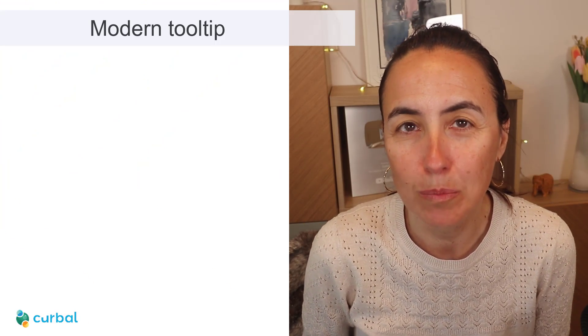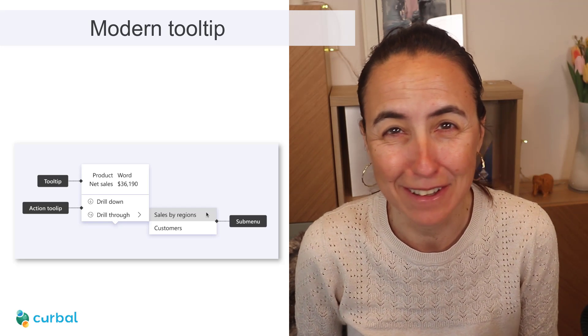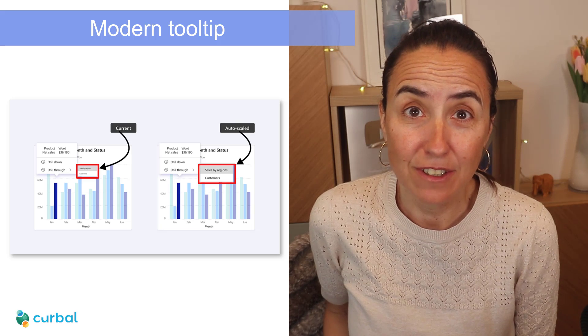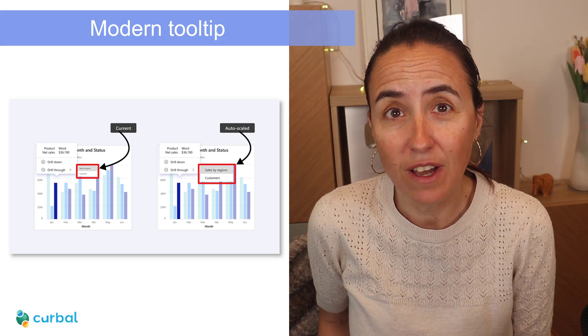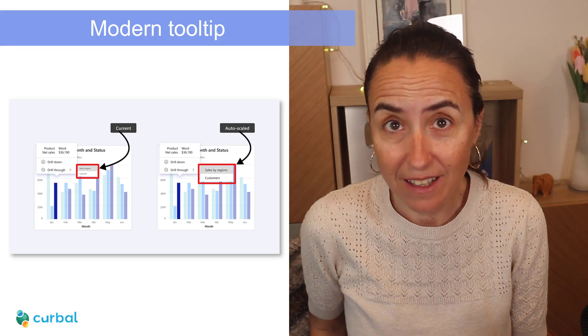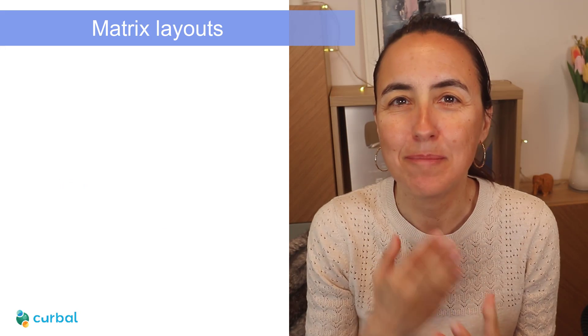Another month and another Power BI update, this time for May 2024. The modern tooltip has now been set on by default, in case you see it's not looking the same way it was before. This is actually from last year, but just a reminder that it auto scales. If you have set that option on, you go to Options > Report Settings > Tooltip Auto Scale and set it on.